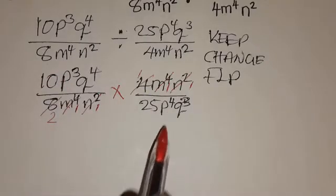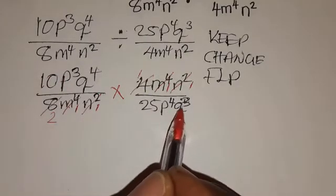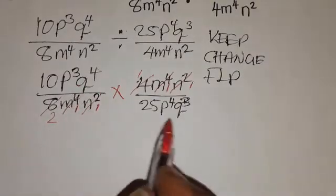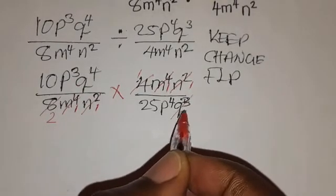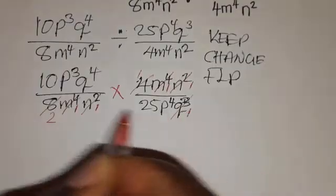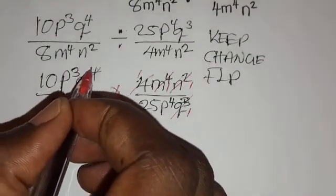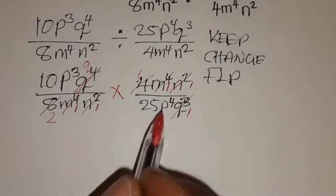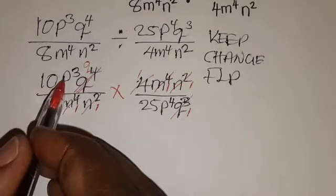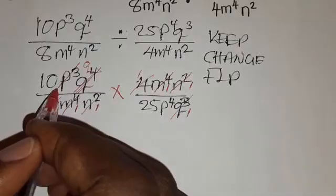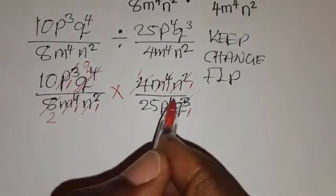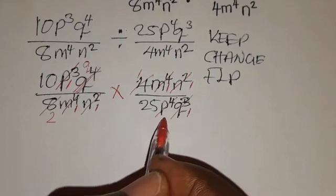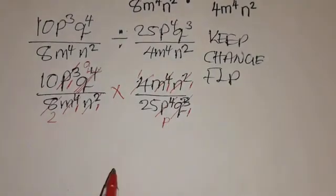We can also cross-cancel the other diagonal. q to the power 3 into q to the power 3 is 1, leaving us with a remaining q from q to the power 4. Then p to the power 3 into p to the power 3 is 1, and p to the power 3 into p to the power 4 leaves just a p.